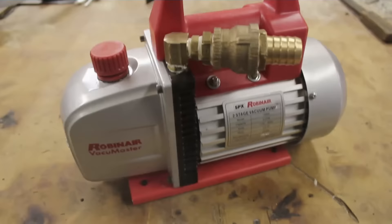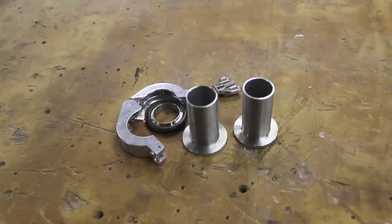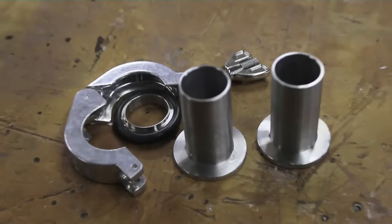I will be using this Robinair 3 CFM air conditioning service pump. A normal shop vac will not work. We need to get down to some low pressures. I also use these KF or NW25 type vacuum connectors so that the pump will work with other things. And that pretty much finished up the build.